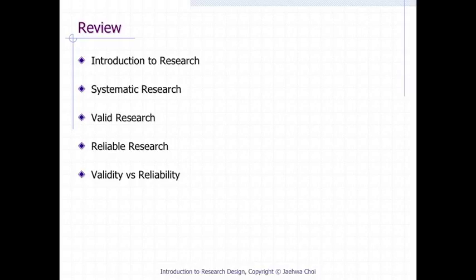We also learned the concept and example of research reliability. Reliability of research concerns the consistency of the research and the extent to which studies can be replicated. This reliability can be further categorized into internal reliability and external reliability. Internal reliability means the extent that data collection, analysis, and interpretations are consistent. External reliability means the replicability of the study.